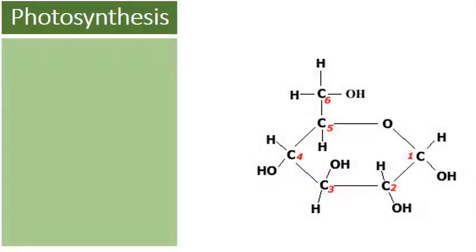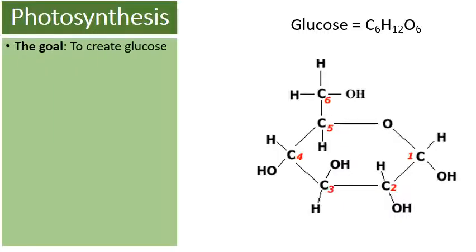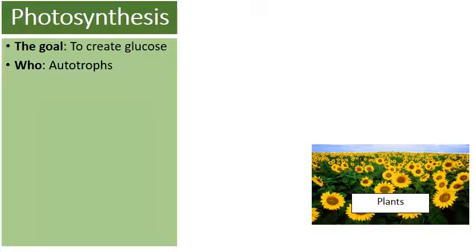Here is a picture of glucose — the molecule glucose: six carbons, twelve hydrogens, six oxygens. The goal of photosynthesis is to capture sunlight in order to produce and create this molecule called glucose.